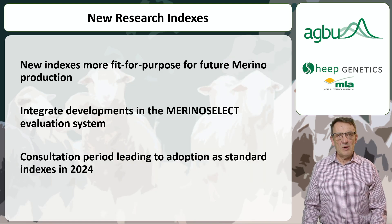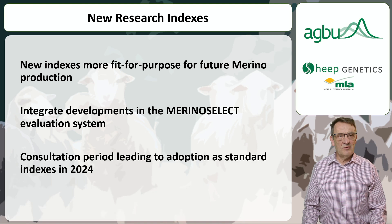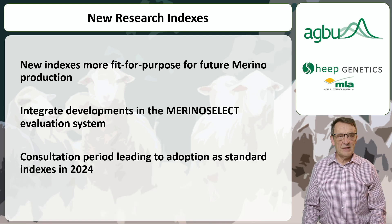This work represents a significant step forward in providing more relevant and accurate indexes for the industry. Importantly, we've integrated developments from the evaluation system, including genomically enhanced ASBVs for reproduction and other challenging to measure traits. These research indexes have been available for nearly a month now, running alongside the current indexes. Over the next year we'll continue our consultation and refinement process leading up to the analysis updates in 2024, when the new indexes will become the standard.